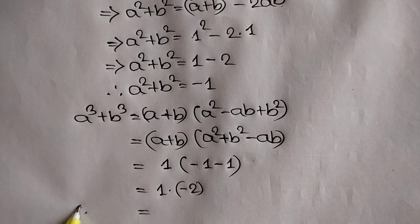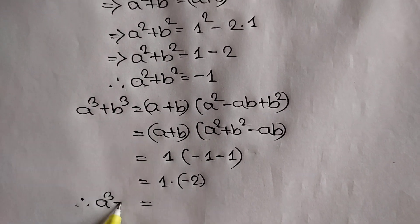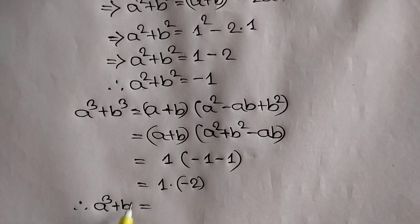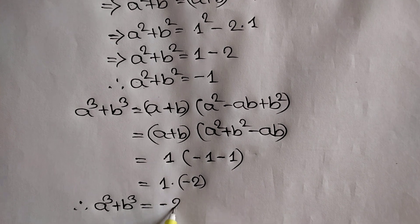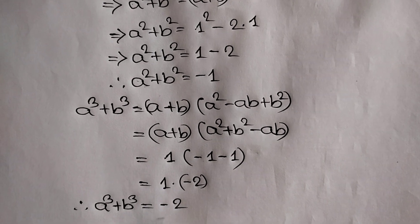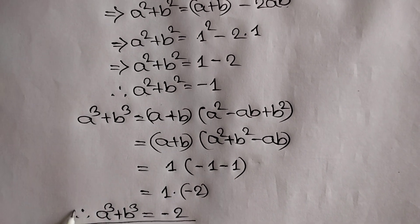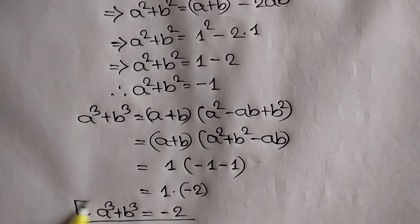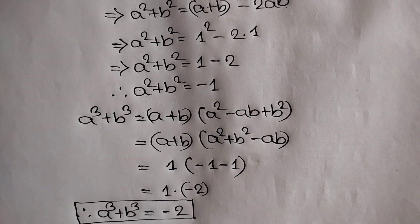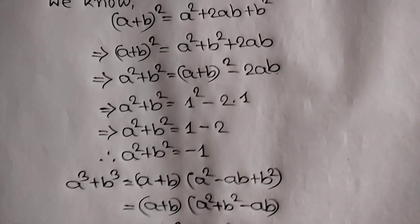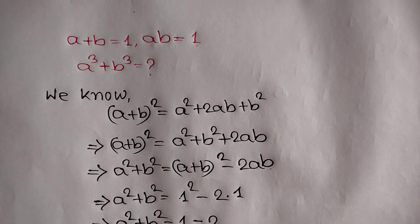Finally, the value of a cube plus b cube is equal to negative 2. Thank you for watching. If you like this video, please subscribe to my channel, and see you in the next video. Bye bye.